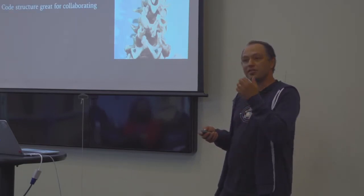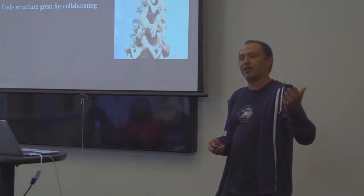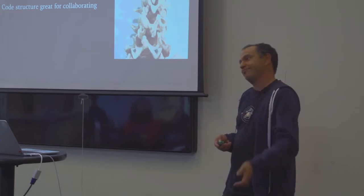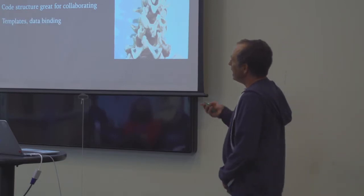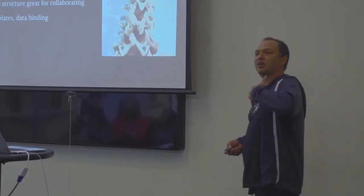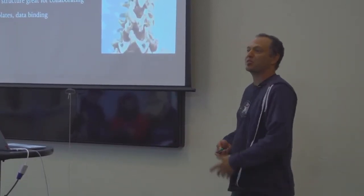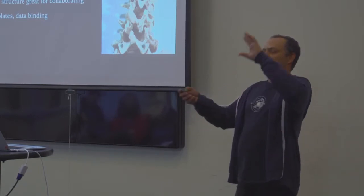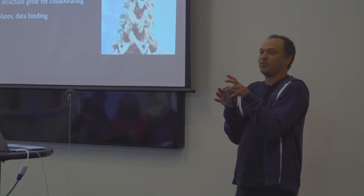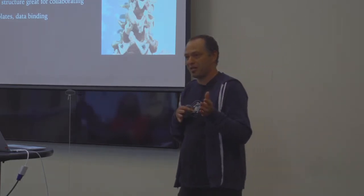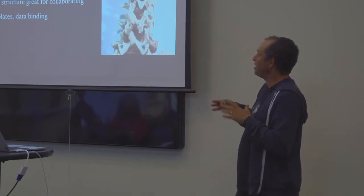The code structure that Backbone creates is great for collaboration because you have separation of concerns — your data in models, your rendering in views, your HTML in templates. It allows multiple people to work on the project at once without all committing to the same file. Templates and data binding — this is one-way data binding — where we're taking data from our models and rendering it with templates onto the DOM. This turns out to be incredibly powerful. If you've ever tried to write HTML into the DOM, you wind up with messy stuff — HTML inside your JavaScript that's hard to debug. When you have templates for your HTML, you know where your HTML is.